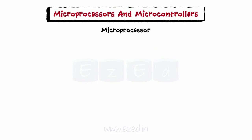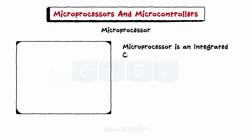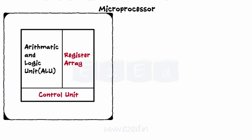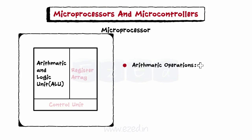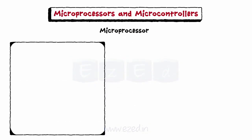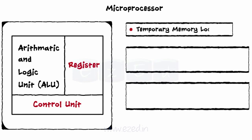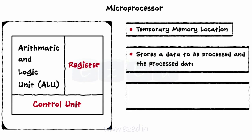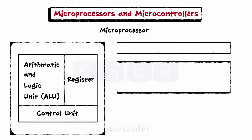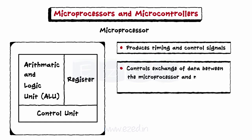Let's move forward to learn about microprocessors. A microprocessor is an integrated circuit which performs all functions of a central processing unit of a computer. It is sometimes abbreviated as μP. Microprocessor consists of a few blocks. The first block is Arithmetic Logic Unit, abbreviated as ALU. It performs arithmetic operations such as addition, subtraction, and logical AND, OR, inversion, XOR, etc. The next block is Register Array. A register is a temporary memory location which stores data to be processed and the processed data. The number of registers varies from processor to processor. The last block is Control Unit, which produces all the necessary timing and control signals for all operations and controls the exchange of data between the microprocessor, memory, and I/O devices.